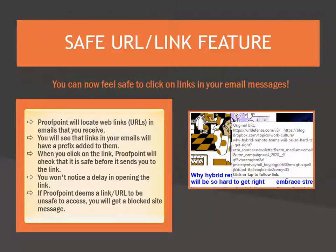The Safe URL link feature improves the safety of clicking on links in emails you receive. Proofpoint locates links inside your emails and adds a prefix that allows Proofpoint to check the safety of the link before opening it. Once you click on a link, you won't notice a delay in opening it. It takes only milliseconds for Proofpoint to analyze a link before allowing you to access it. If Proofpoint determines there is an issue with a link, you will be taken to a website has been blocked message.